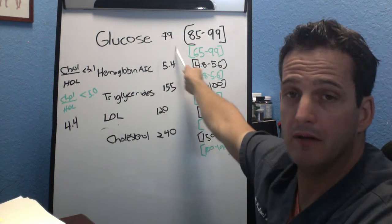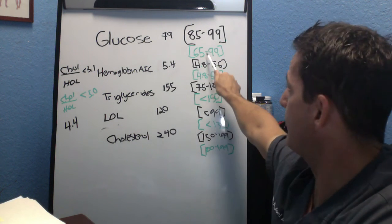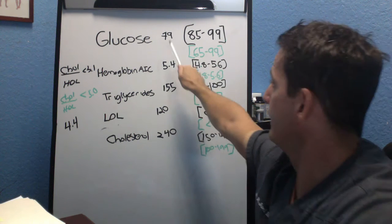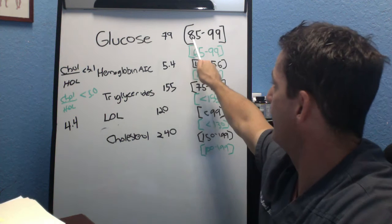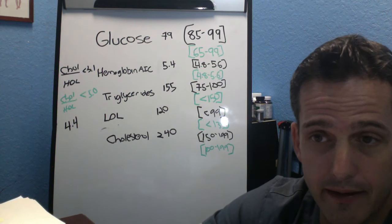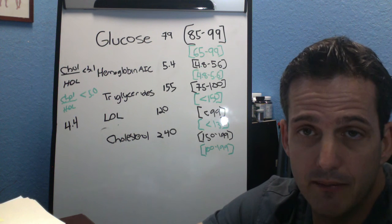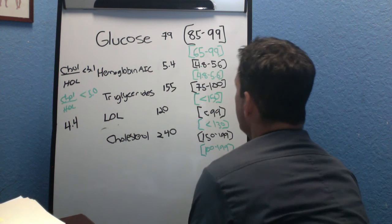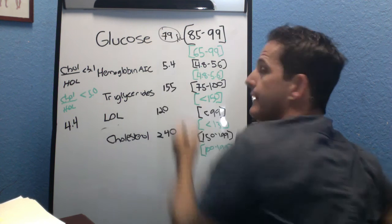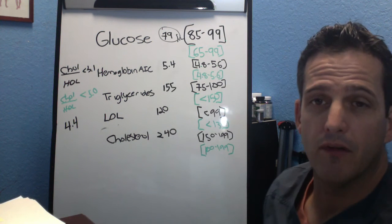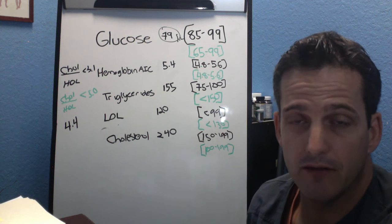So for example I have a patient, 79 is the glucose level, and so from a lab range 65 to 99 they're right in that range. They're told that they are normal. However from a healthy range 85 to 99. So that tells me that this patient more than likely is reactive hypoglycemic. This would be considered functionally low. So from a lab range they're normal. From a healthy range they're not in the healthy range, they're a little lower.